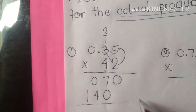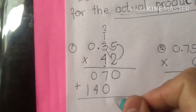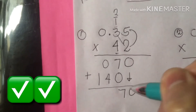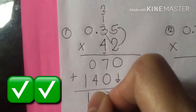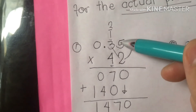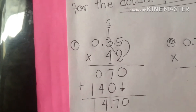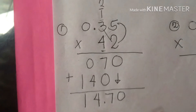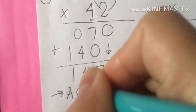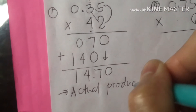Then we are going to sum up by putting the addition sign. Bring down 0, bring down 7, bring down 4, and bring down 1. Remember class, we count the decimal places: 0.35 has 2 decimal places. Our answer is 14.70 — our actual product.